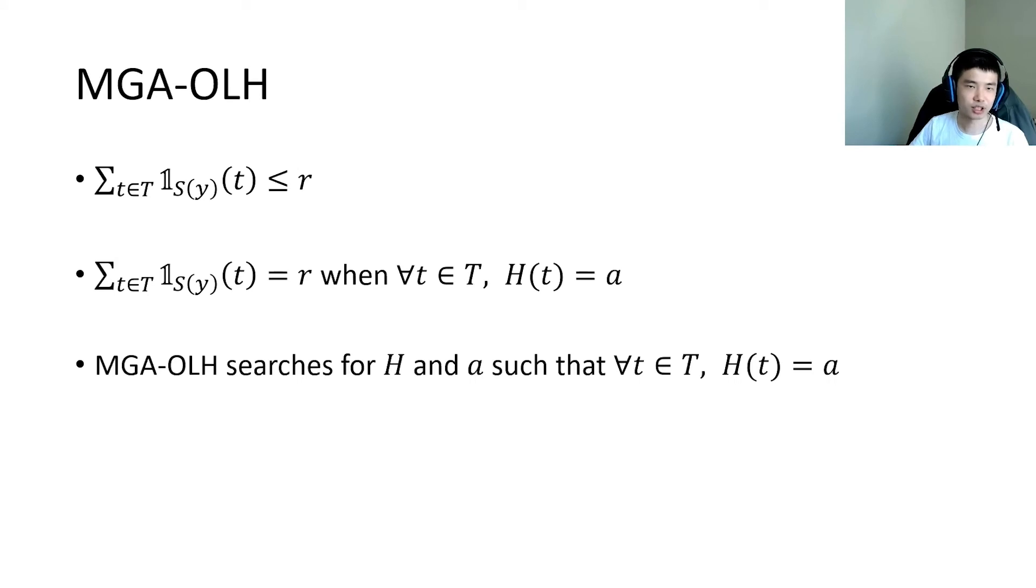In OLH, for each fake user, MGA searches for the hash function that hashes all target items to a same hash value and reports the hash function and hash value pair to the server. The overall gain is shown here.